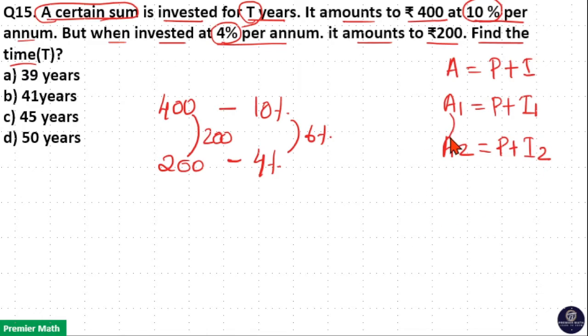Now, if you take the difference in amount, 400 minus 200 is Rs. 200 here. If you take the difference on the right-hand side, P and P get cancelled.